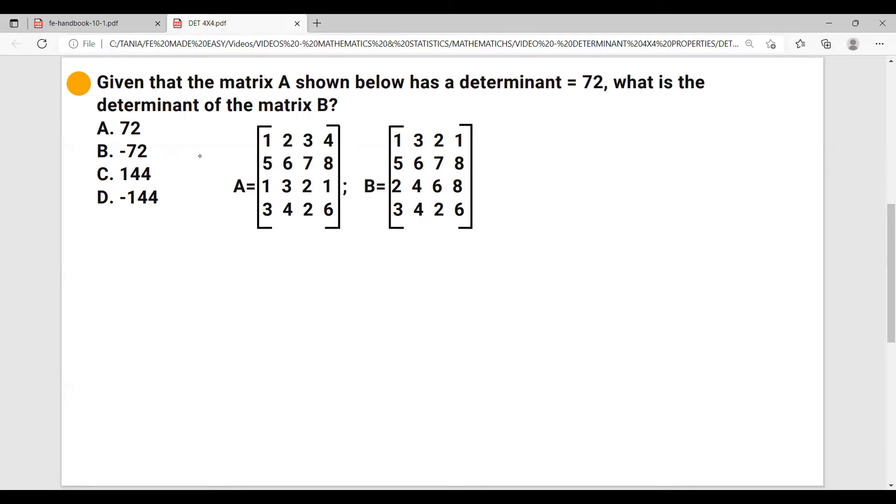There are a few things about matrices that you must know in order to solve this problem. Number one, and I want to write it down: a row interchange causes the determinant to change in sign. Row interchange results in determinant change in sign.